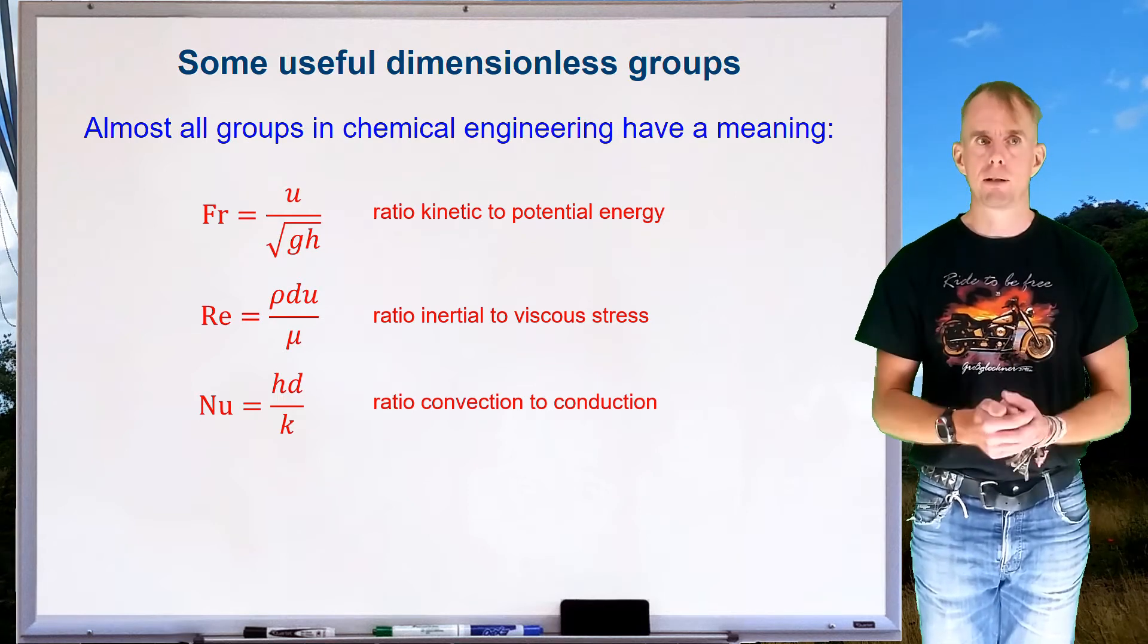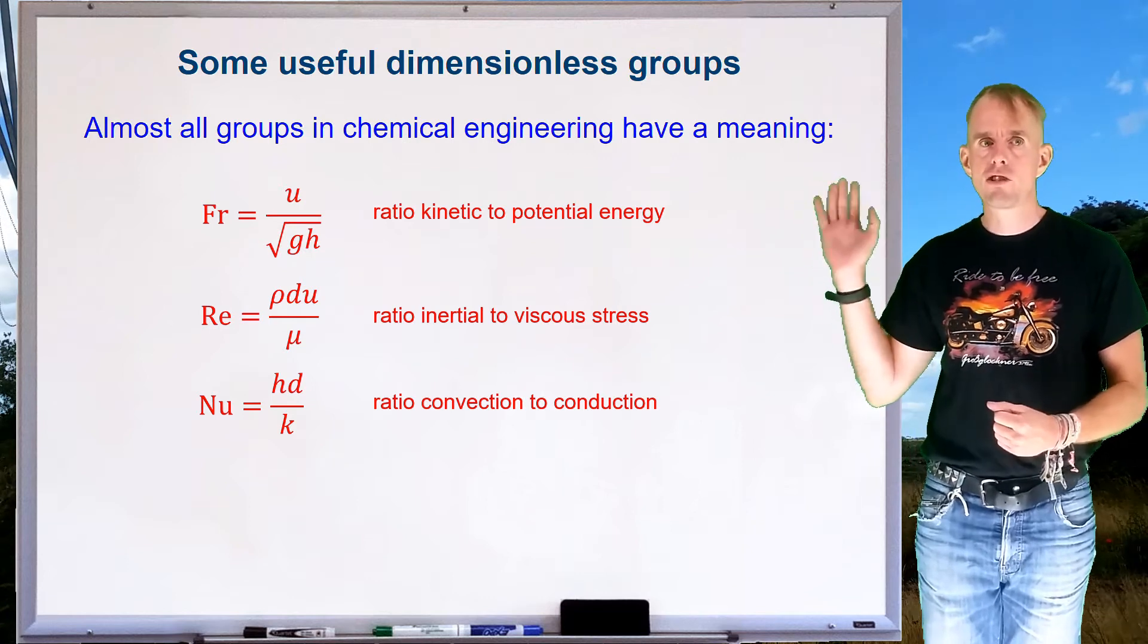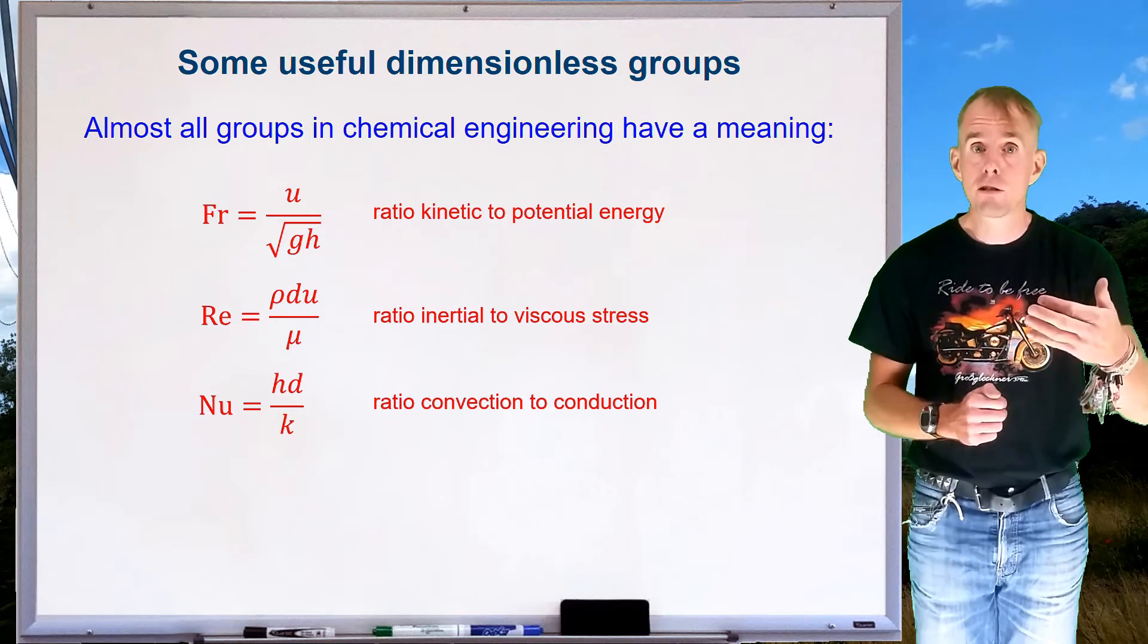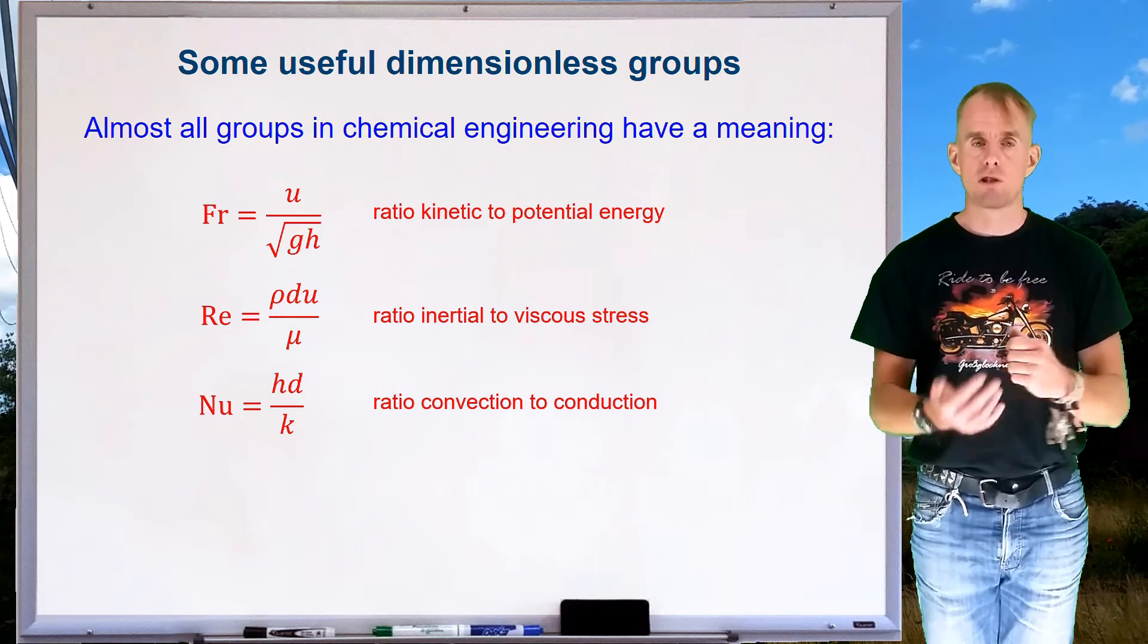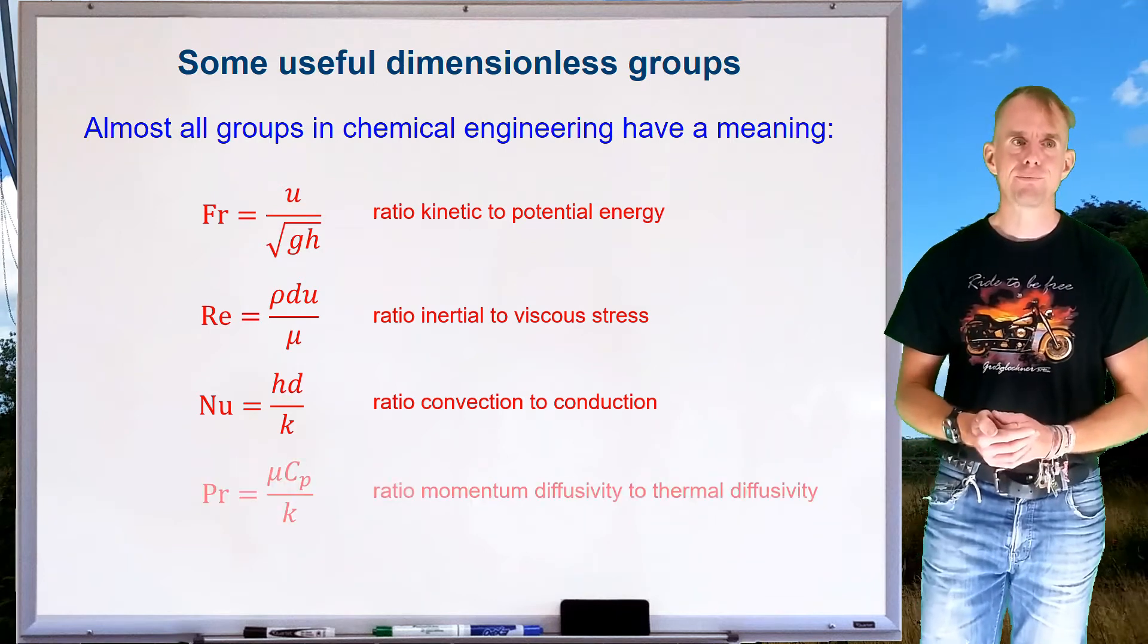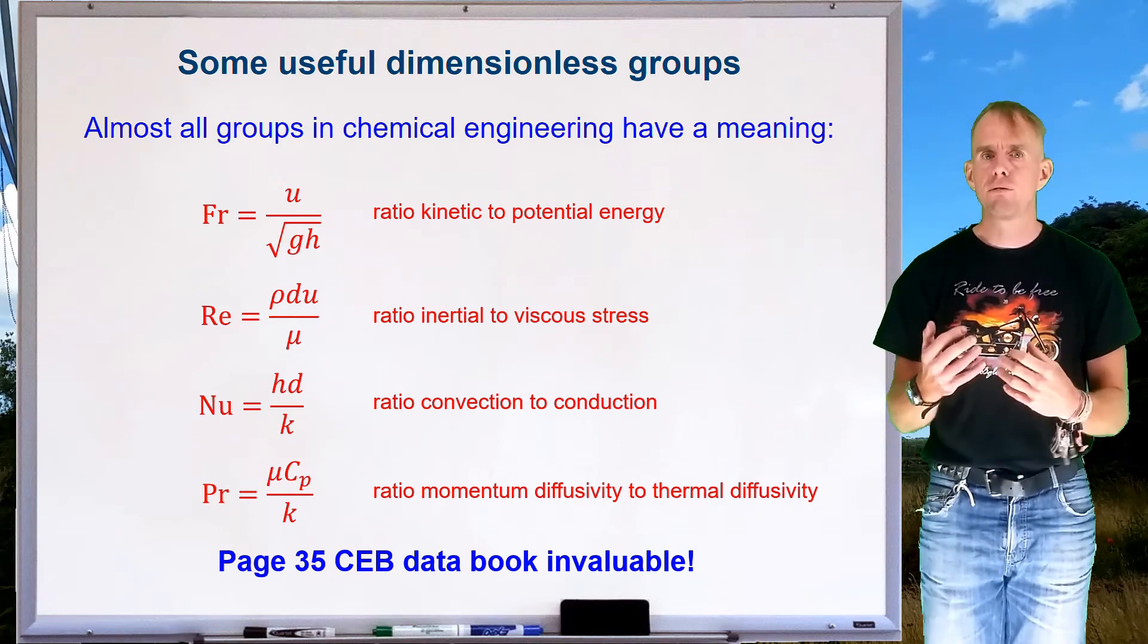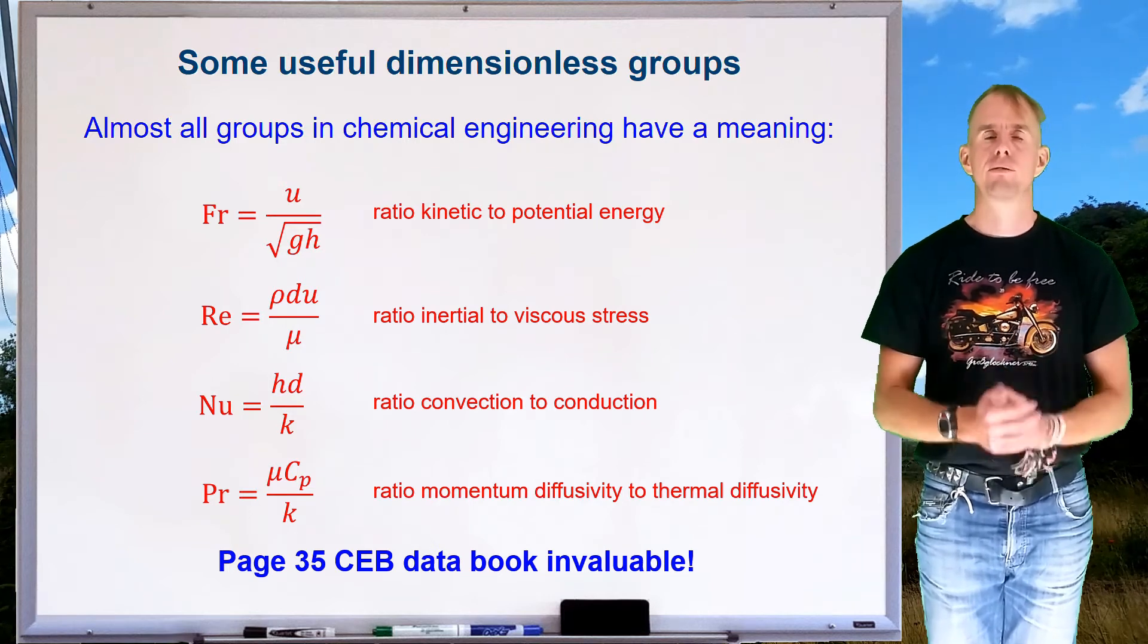When you study heat transfer, which you will do next term, you will see something called the Nusselt number. This is the ratio of convective heat transfer to conductive heat transfer. It's written HD over K. H here is a heat transfer coefficient. You'll learn more about that later on in your course. D is a length scale. K is a thermal conductivity. So does convection dominate a problem? Or does conduction dominate a problem? And knowing whether convection or conduction dominates allows you to build a mental model of what's actually going on in a given physical process. You will also come across the Prandtl number, mu Cp over K, viscosity times heat capacity divided by thermal conductivity. This is the ratio of momentum diffusivity to thermal diffusivity, which is a very useful group, again, in heat transfer and fluid mechanics.